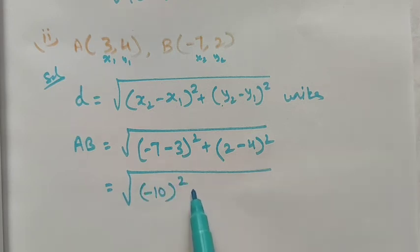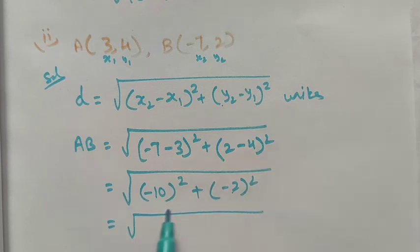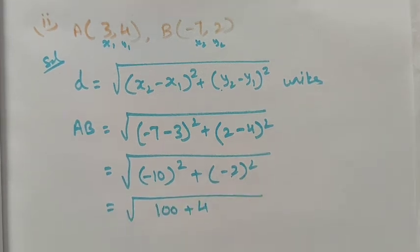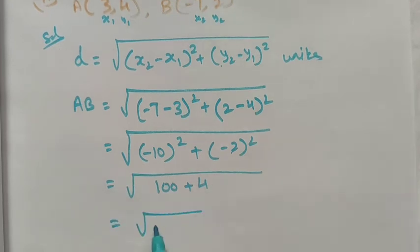...√((-10)² + (-2)²) = √(100 + 4) = √104.